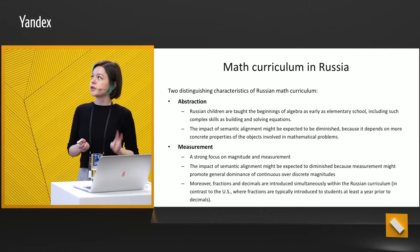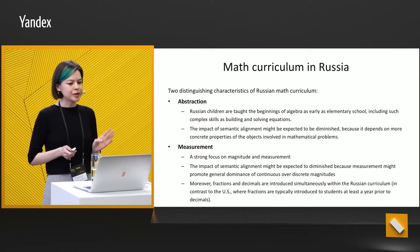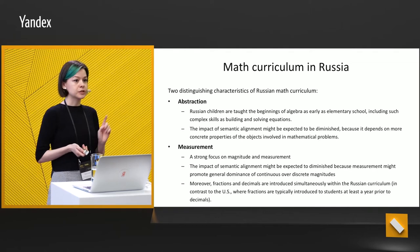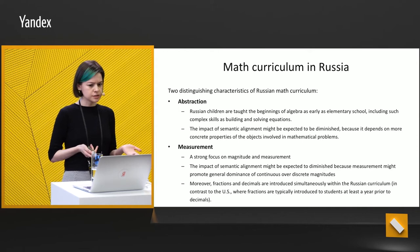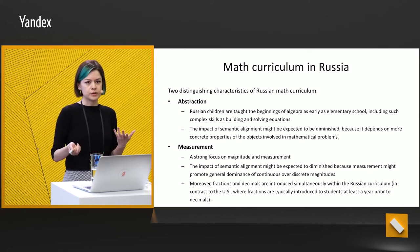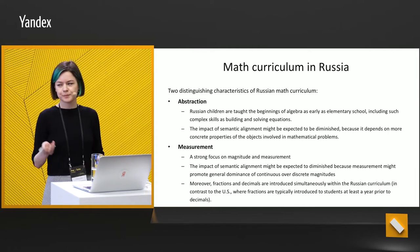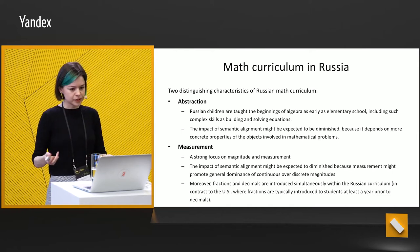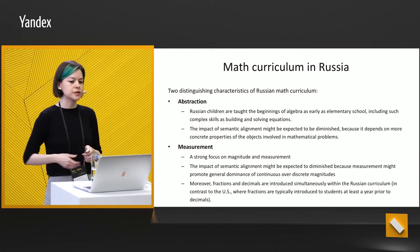I would like to focus on two characteristics: abstraction and measurement. For measurement, we have a very strong focus on magnitude and measurement in elementary and secondary school. For example, students in elementary school usually meet with kilometers, weights, and various measures — they have to measure something, using other objects to measure the magnitude of other objects.